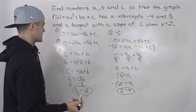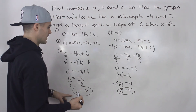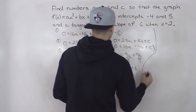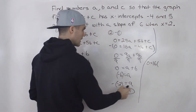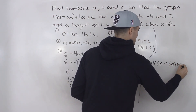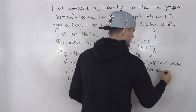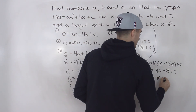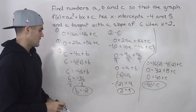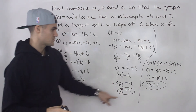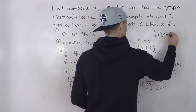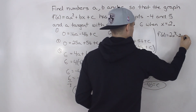We can find c by plugging a and b into the first equation. So 0 equals 16 times 2 minus 4 times negative 2 plus c. That gives 0 equals 32 plus 8 plus c, so 0 equals 40 plus c, meaning c equals negative 40. So a is 2, b is negative 2, and c is negative 40. The final equation is f of x equals 2x squared minus 2x minus 40.